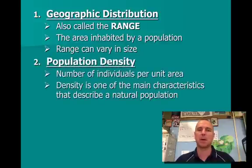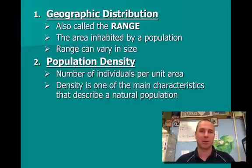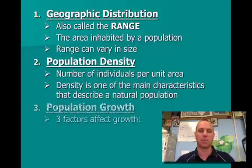The second characteristic is population density. That's exactly what it says — it's the number of individuals per unit area. New York City is more heavily populated density-wise than a town in North Carolina. So population density is going to affect how the growth of populations occurs.